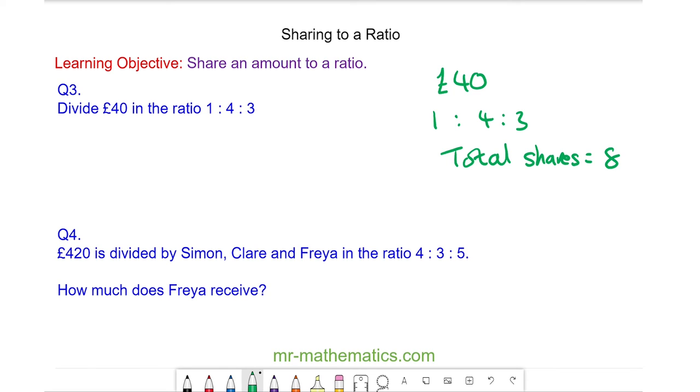So the value of one share will be the £40, the total amount, divided by eight, which is £5 per share.